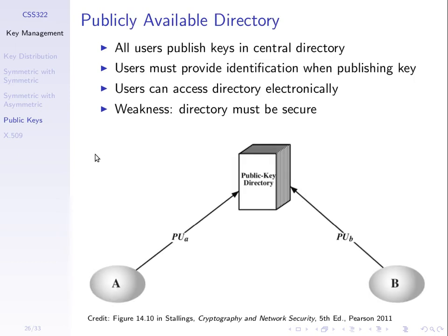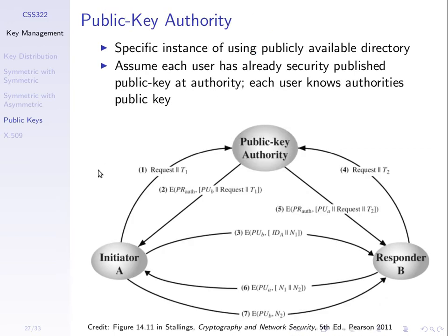One approach is to have some form of directory — a special server where all the users, A and B, publish their key. The directory is like a database listing all the keys of all users, and when someone wants to find someone else's public key, they contact that directory or server. Again, how does the directory know that the public key coming from A is actually A's key and not an impostor's? We arrived at an approach where we use a third party, an authority, to provide evidence that a particular public key belongs to a particular user.